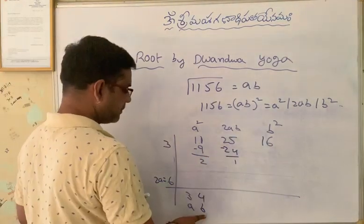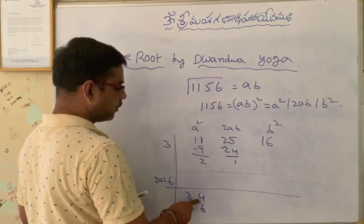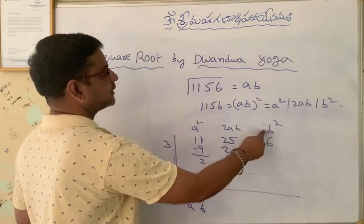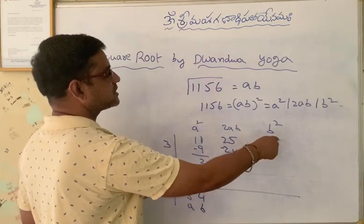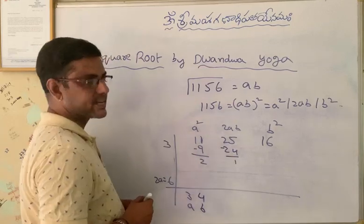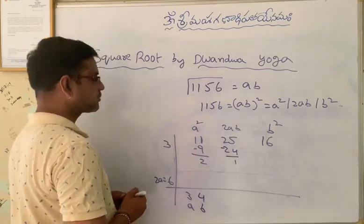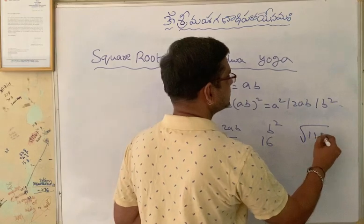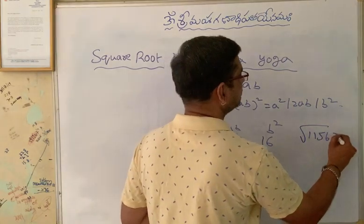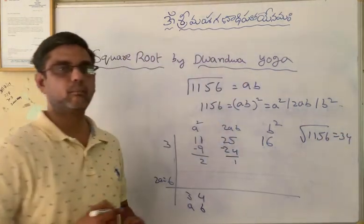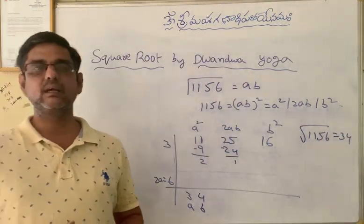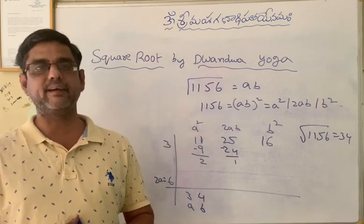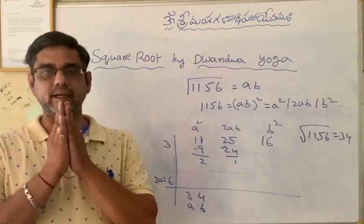B value is 4, B square is 16, and we got the same over here — B square is 16. So the problem is done. The square root of 1156 is 34. So my dear friends and my dear students, I think you understood this method very well.